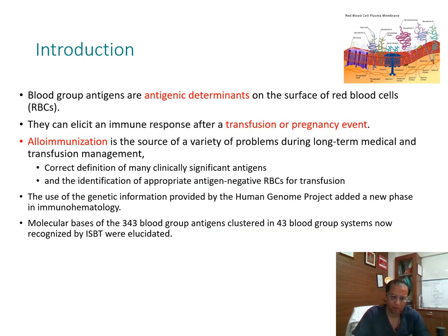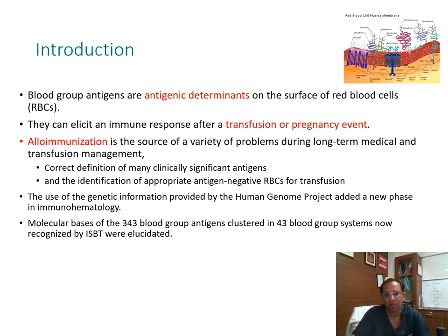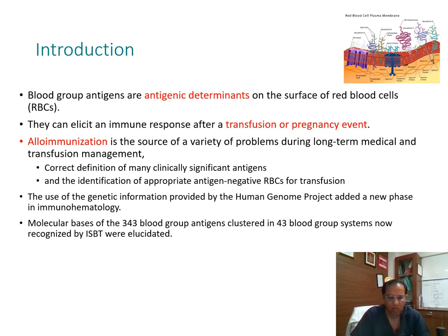The basic crux is this: blood group antigens — whether they are proteins or antigenic determinants on the surface of the red blood cell — are the ones which cause antibody formation. They can elicit an immune response after a transfusion or a pregnancy event, and alloimmunization is what happens. It is the source of a variety of problems during long-term medical and transfusion management. Correct identification of clinically significant antigens and antigen-negative RBCs for transfusion is where transfusion medicine specialists need to act.